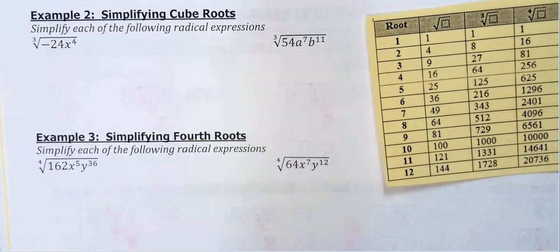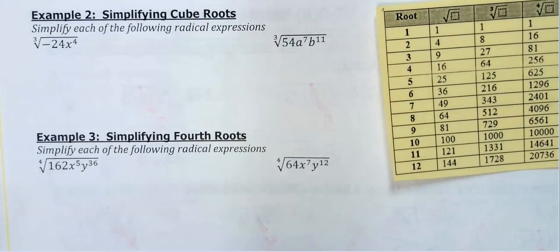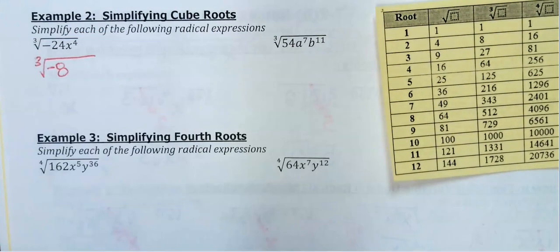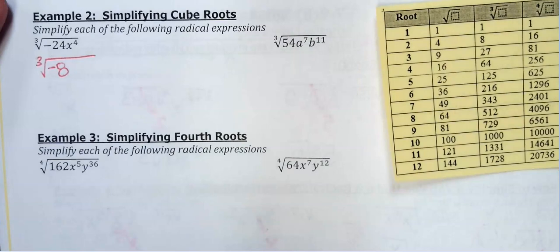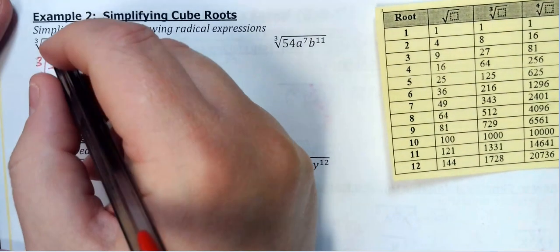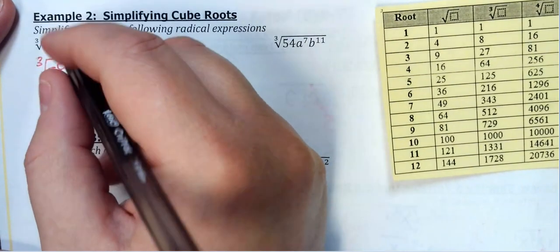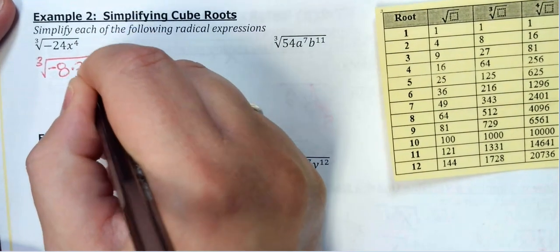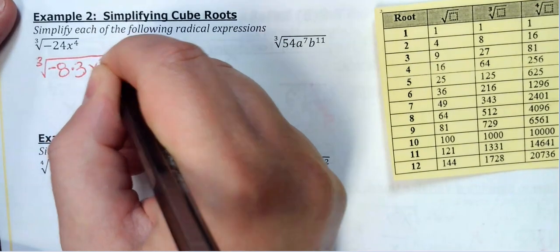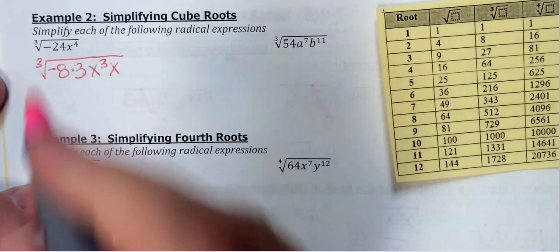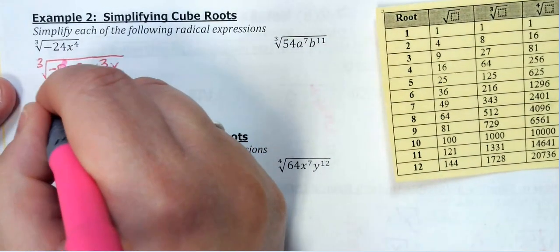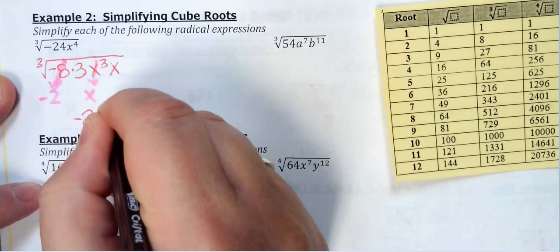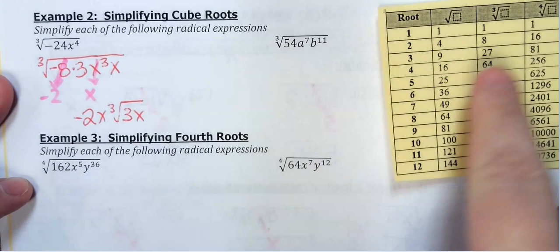For the cube root examples, I want to look at the list of perfect cubes. You can take the cube root of a negative number — I just attach the negative to the perfect cube. You can't take a square root or fourth root of a negative and get a real answer, but you can with the cube root. For ∛(-24x⁴): 24 = 8×3, and x⁴ needs its exponent divisible by 3, so I break it apart. This comes out as -2x, with 3 and x left underneath.